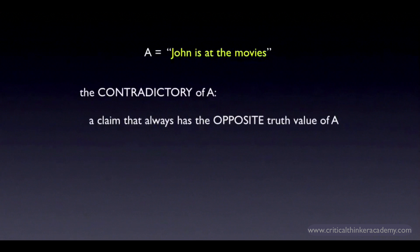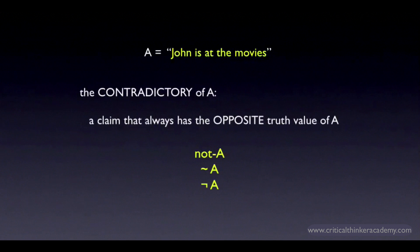There are a couple of different ways that people write the contradictory of A. We're going to use the first way, writing it in English as 'not A'. But in textbooks and websites that treat logic in a more formal way, you'll likely see 'not A' written with the tilde — that wavy symbol — or as that corner of a rectangle shape.